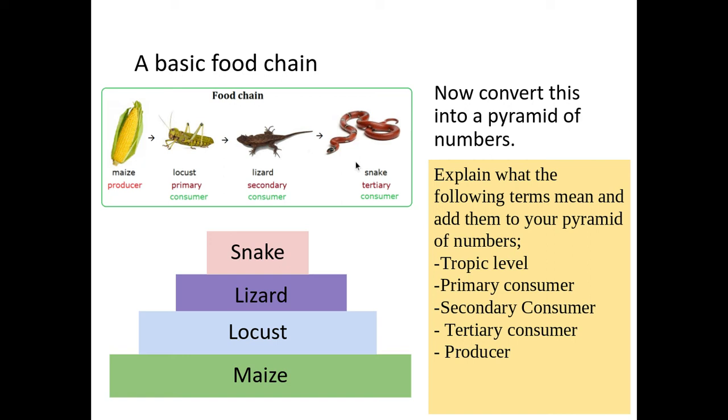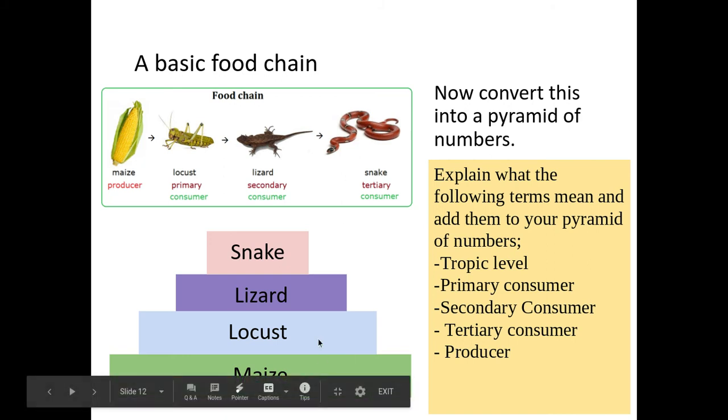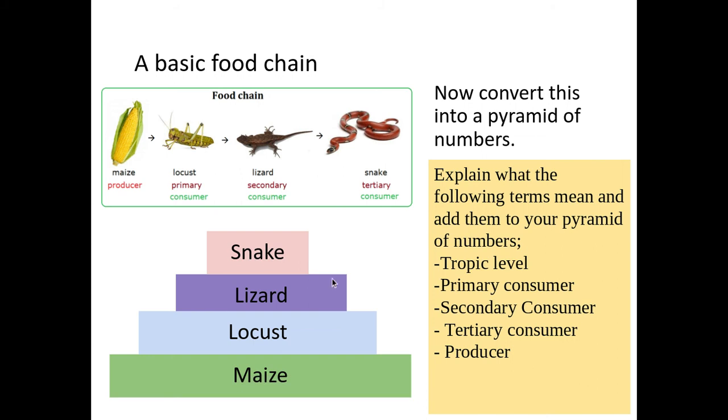If you have a look and apply those definitions we just looked at, there's the first trophic level, second trophic level, third trophic level, and fourth trophic level. We have our producer here at the bottom, which is our maize, our primary consumer, which is our locust, secondary consumer, our lizards, and our tertiary consumer, which is our snake in this particular example.